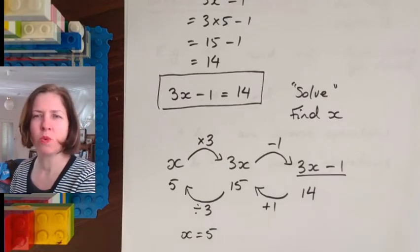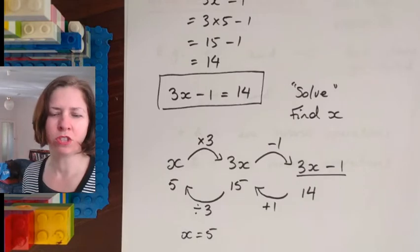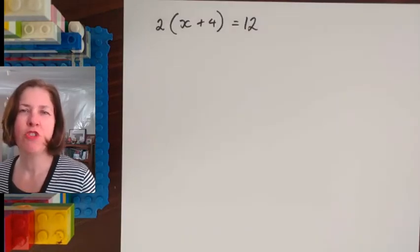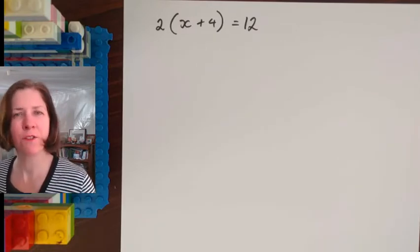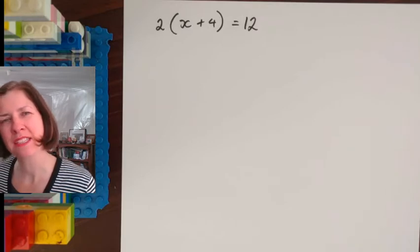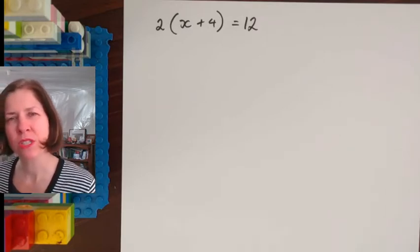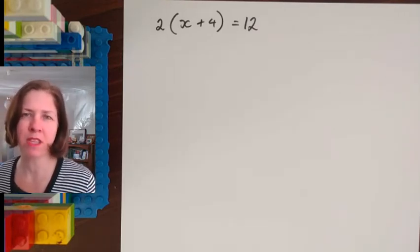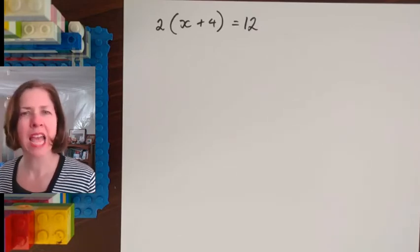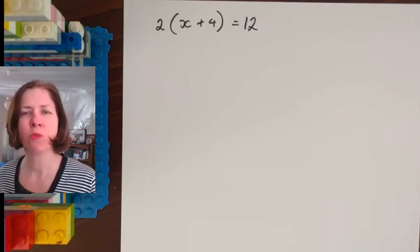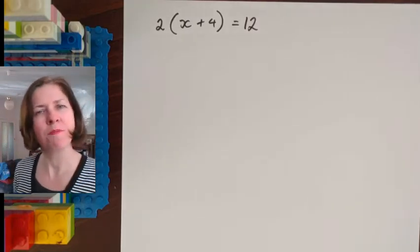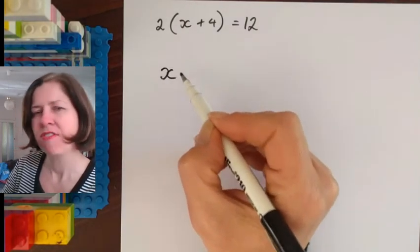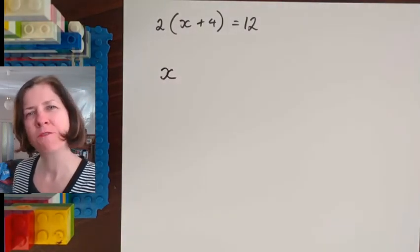So now we're going to use this method with a new example where we don't yet know the solution. So here's my example. Now you might be able to do this one by inspection and if you can that's great because you can already think what the answer is. But I want you to make sure that you practice using this method because we're learning this method so that when the questions get complex we've got a method that we can use. So 2 times x plus 4 in brackets is going to equal 12.